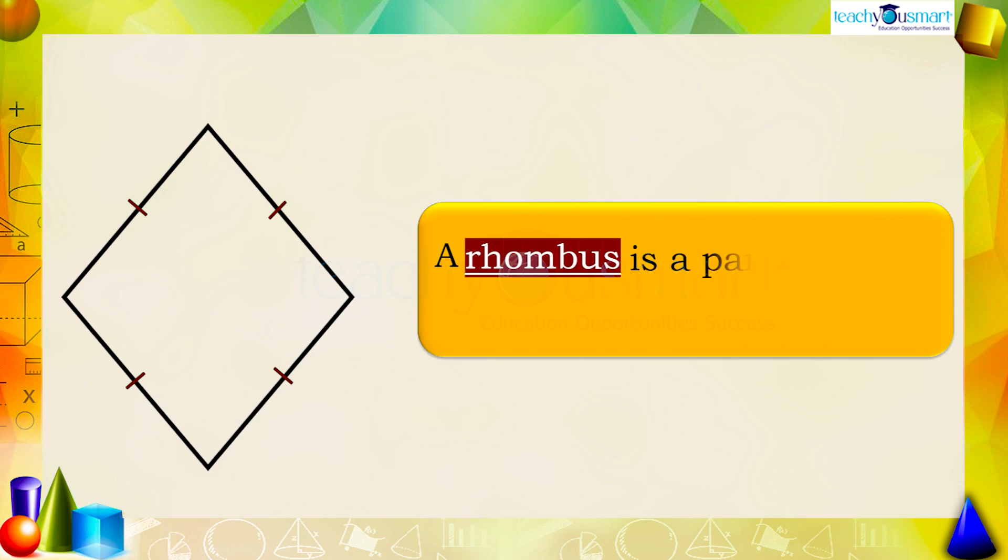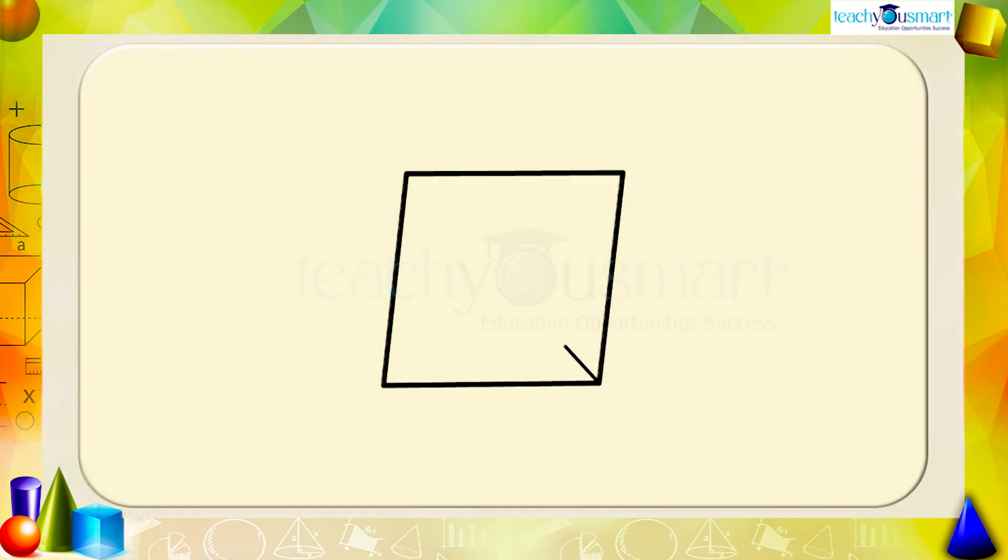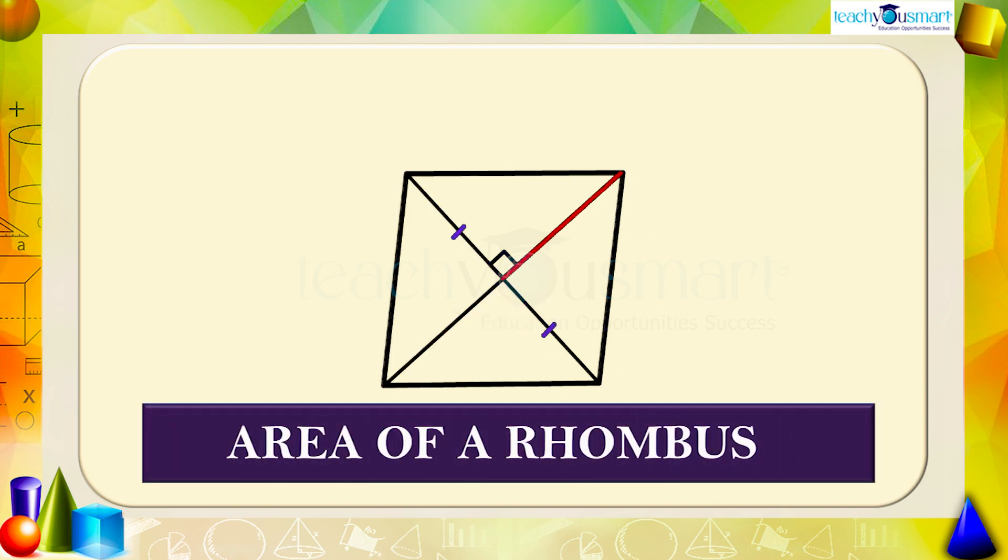Rhombus is a parallelogram with sides of equal length. In a rhombus, the diagonals perpendicularly bisect each other. Here we have to find the area of a rhombus.